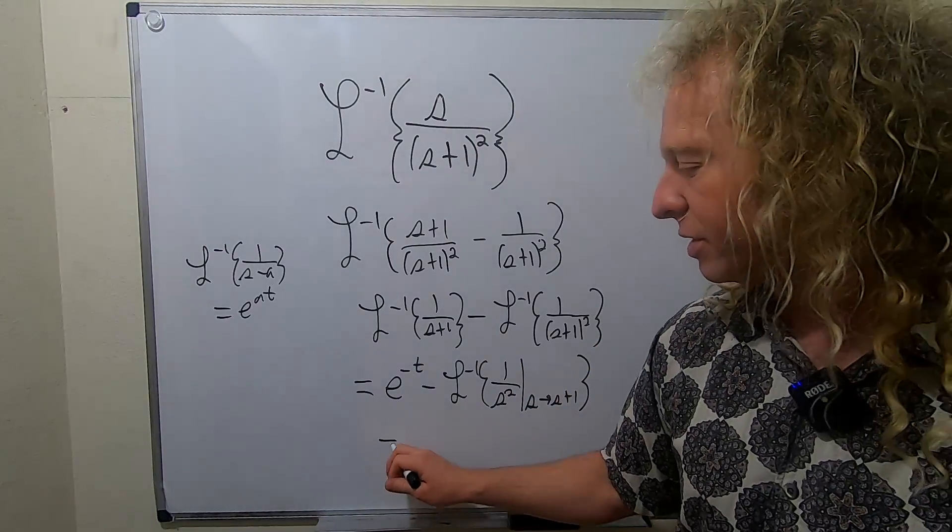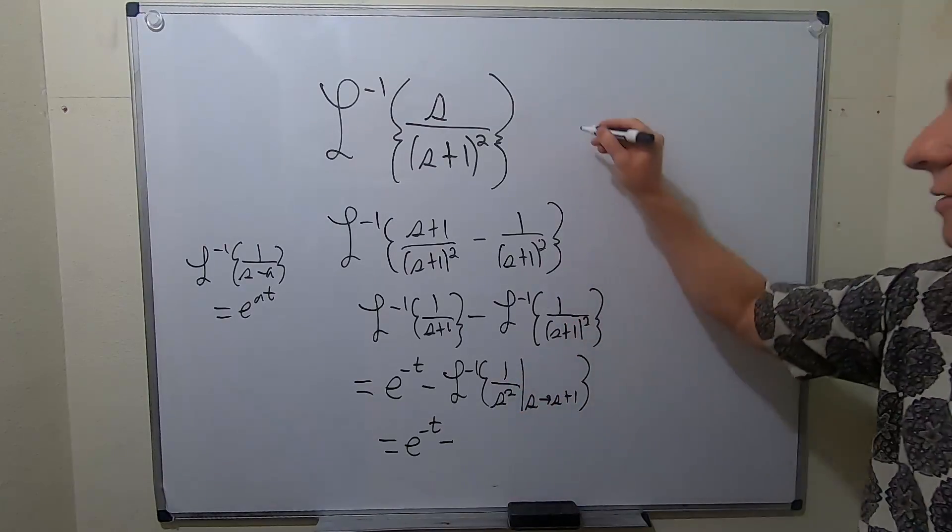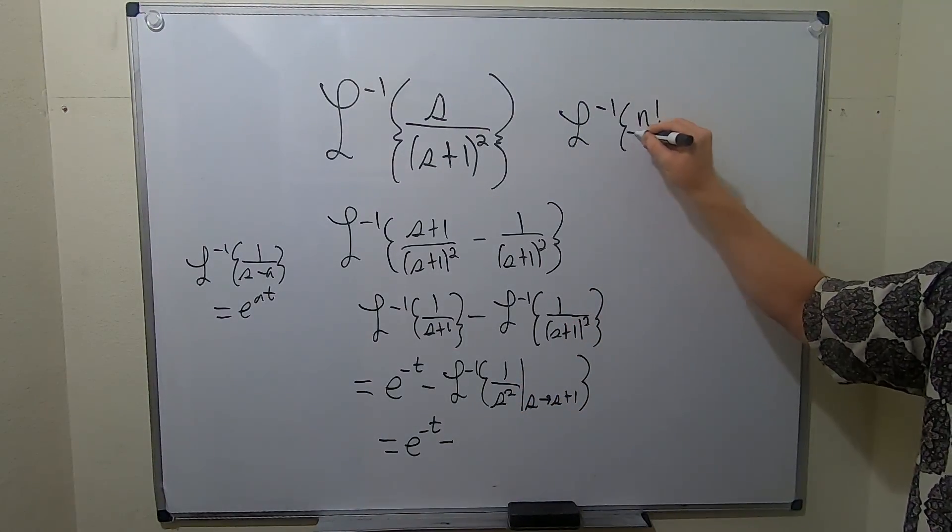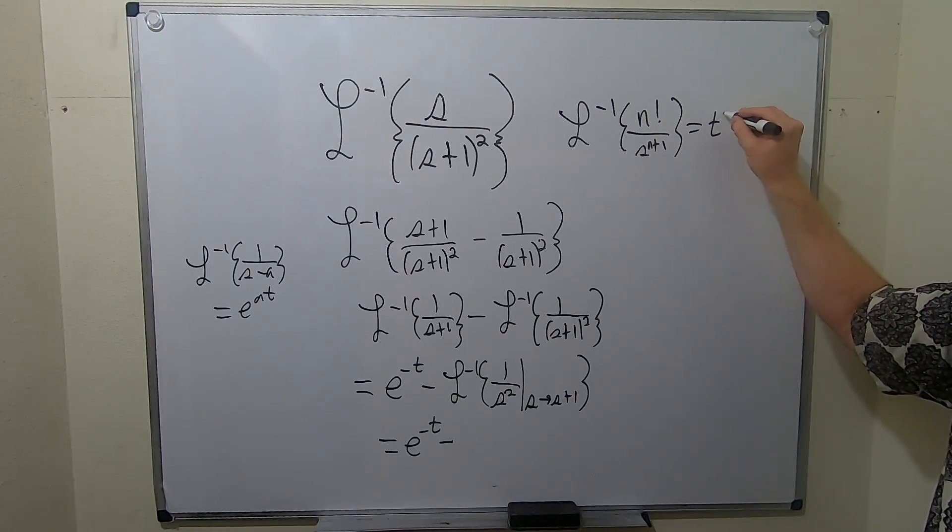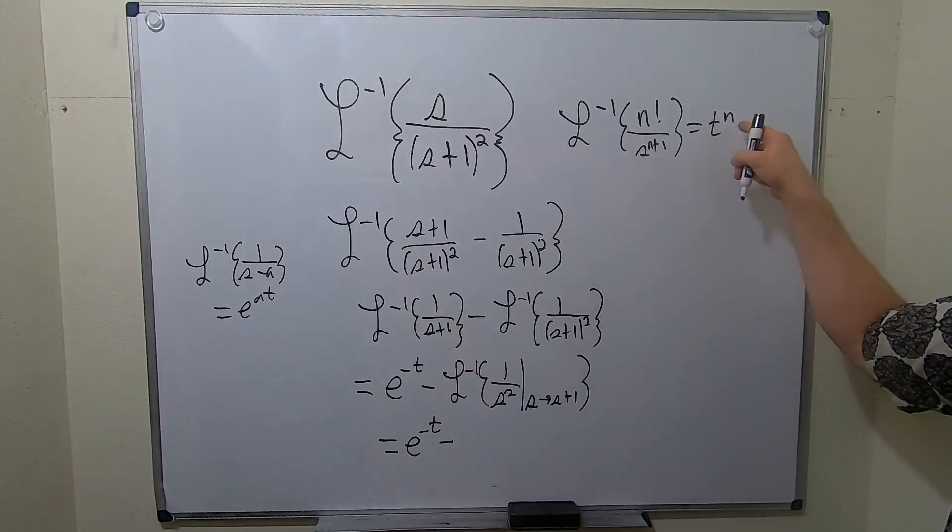So this is e^(-t) minus... then we need a formula for this too. Lots of formulas in this problem. The inverse Laplace of n!/(s^(n+1)) is equal to t^n. So here it's 1!/s², so it's just going to give us t^1. This will be t and this turns into a shift.